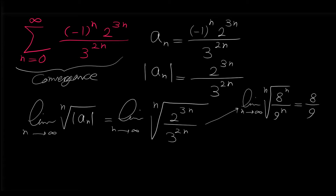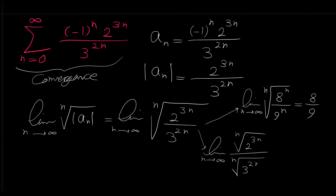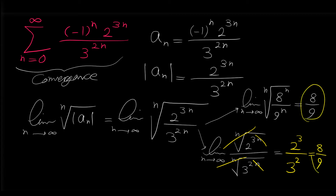Another way to find this limit is to write it as the limit as n approaches infinity of the nth root of 2 to the 3n over the nth root of 3 to the 2n. In the numerator, the nth root cancels with the power, leaving 2 to the 3, which is 8. In the denominator, 3 to the 2 is 9. So we get the same answer: 8 over 9, confirming that the given series is convergent by the root test.